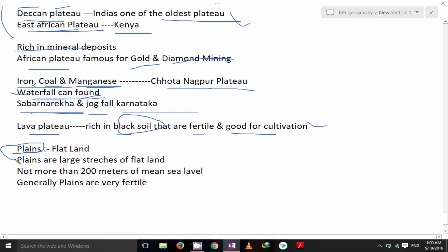Plains are nothing but flat land. Plains are large stretches of flat land, not more than 200 meters of the mean sea level. Generally plains are very fertile so we can grow crop.